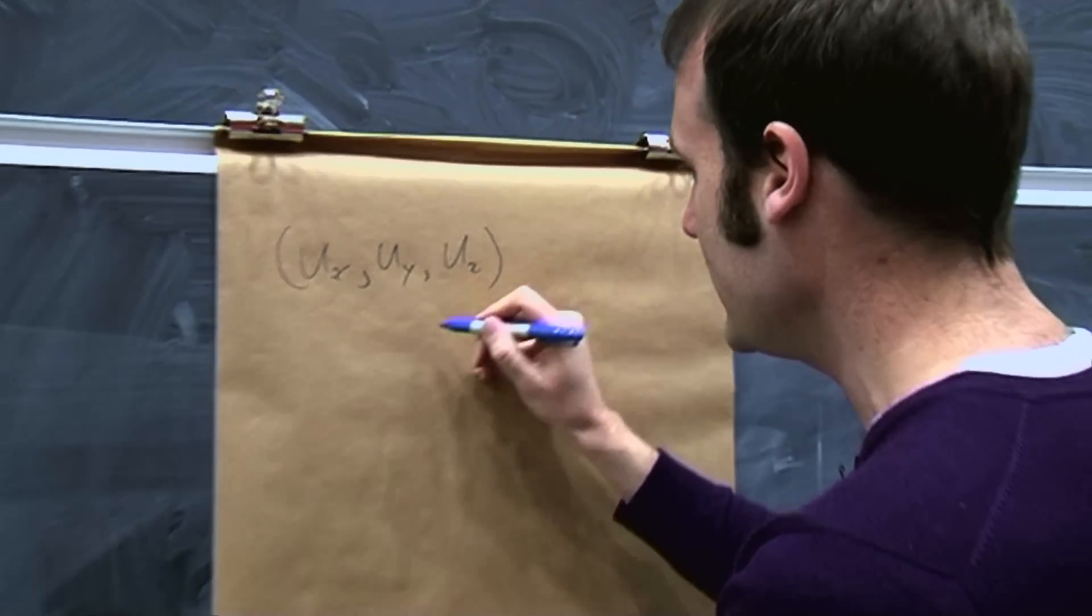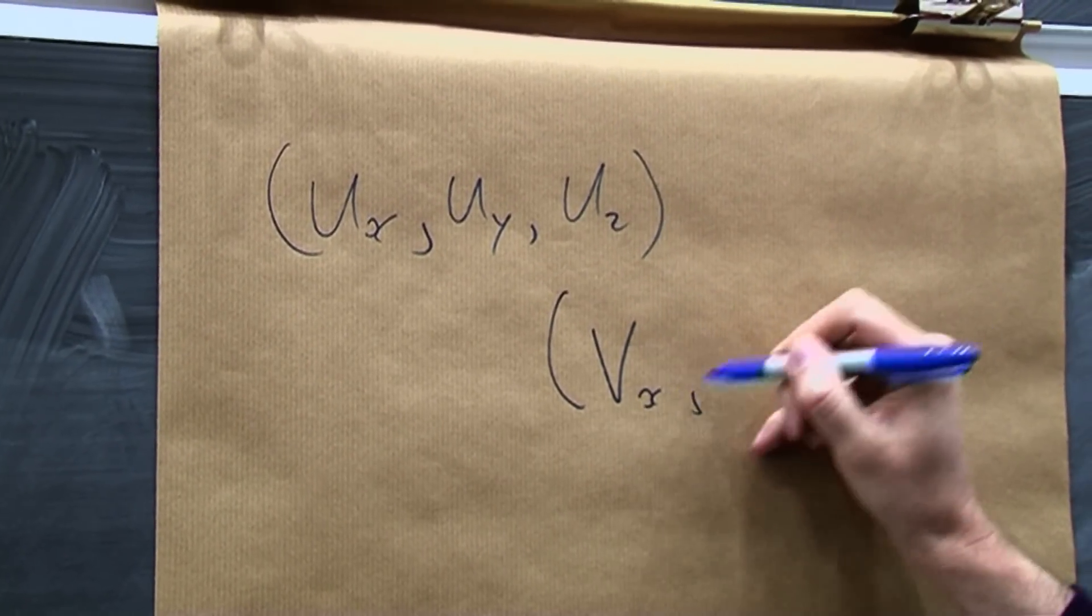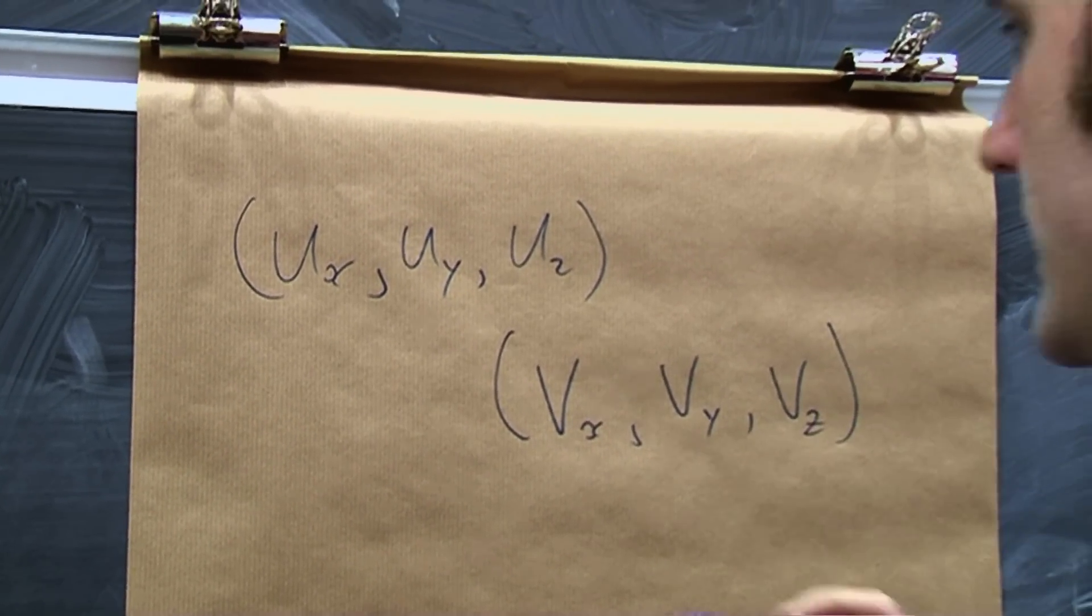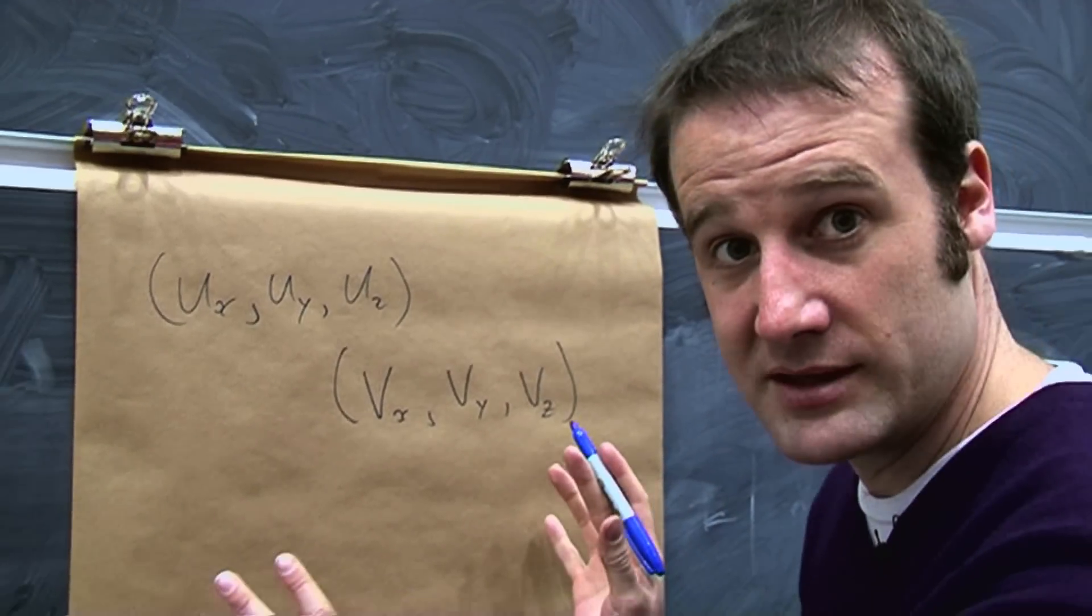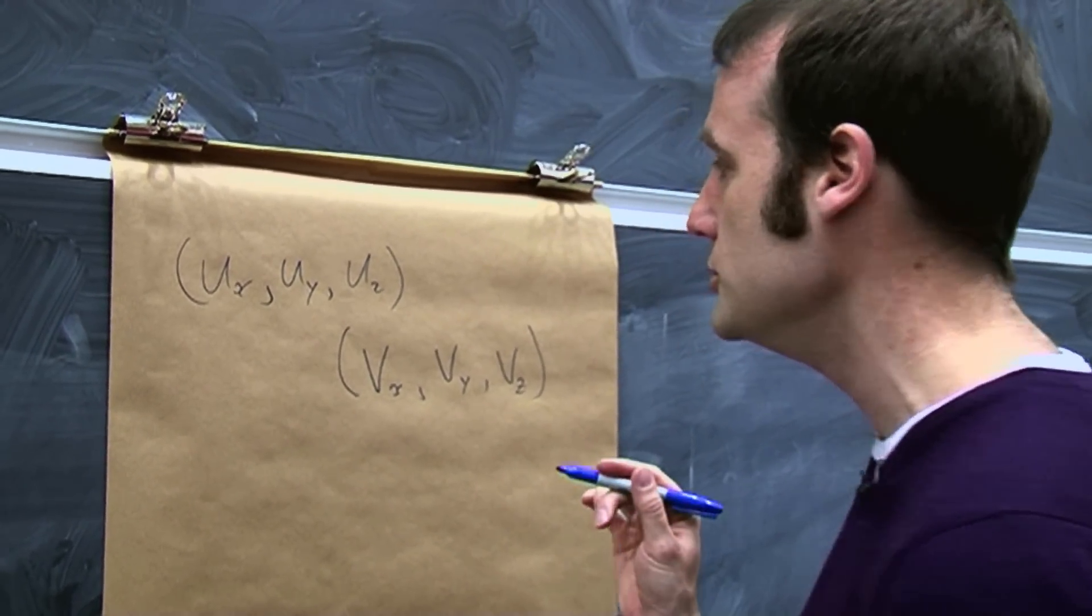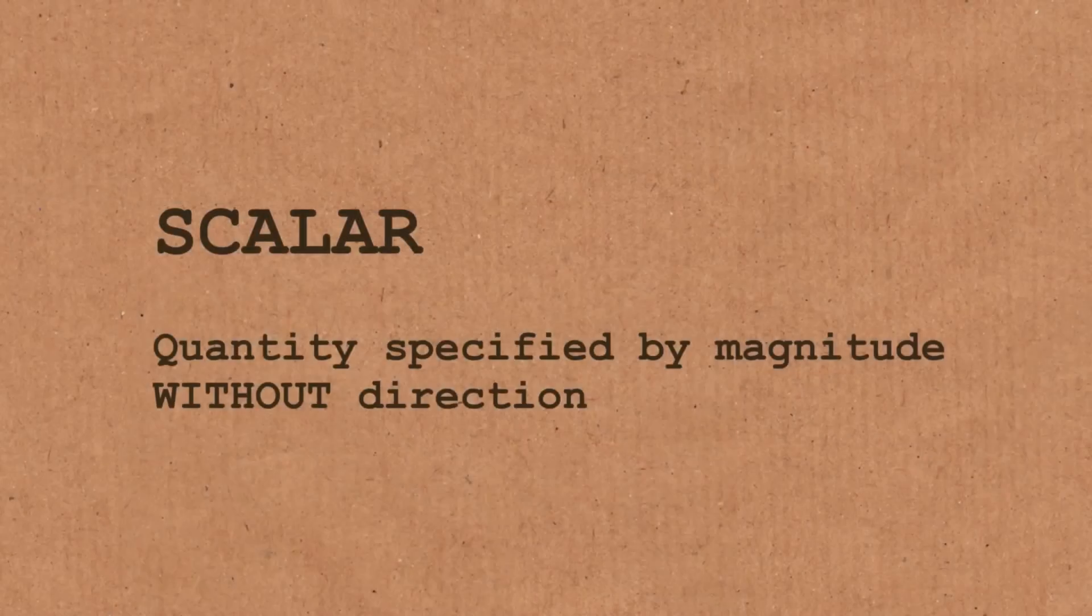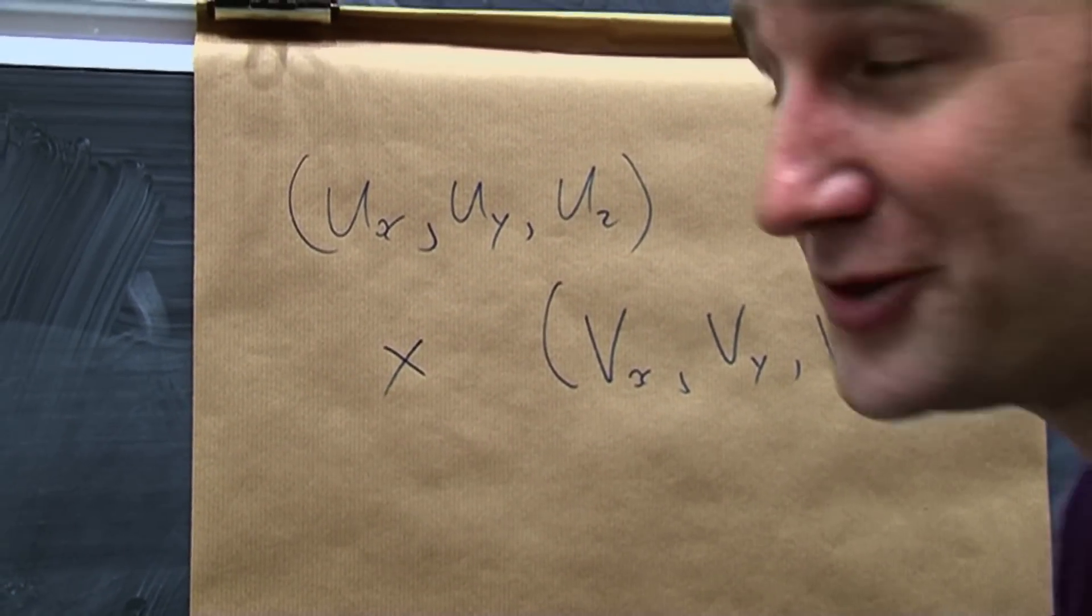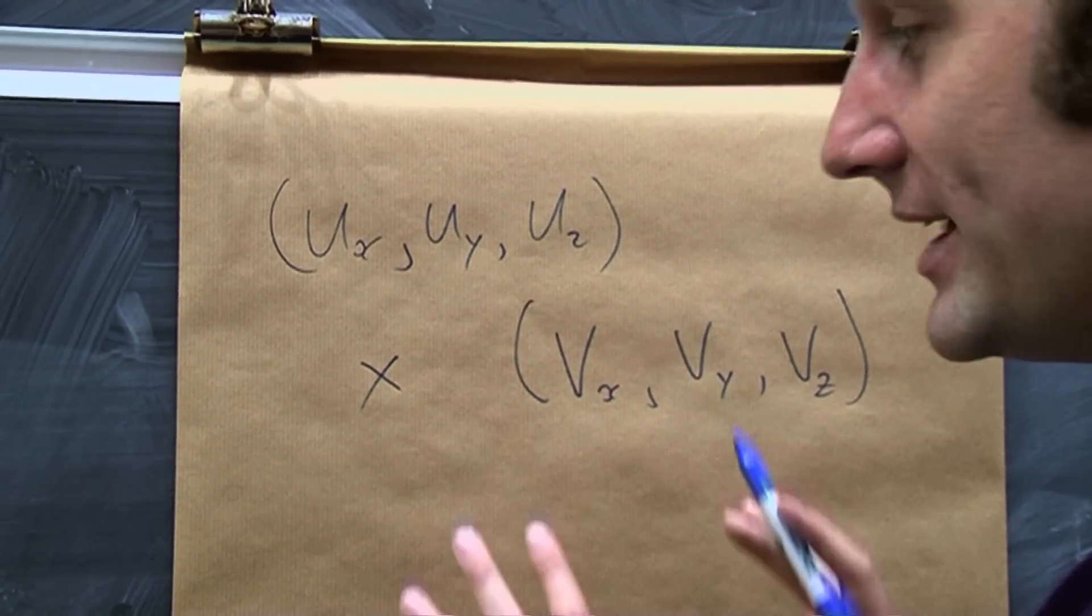And then I want to multiply these two vectors. And there's more than one way to do that. You can dot multiply, which gives you a scalar, which is just a normal number out as an answer. Or you can cross multiply using our traditional cross multiply symbol, which gives you another vector. Now, cross multiplying is a little bit complicated.